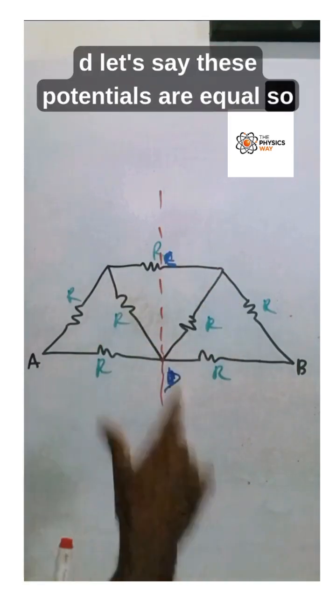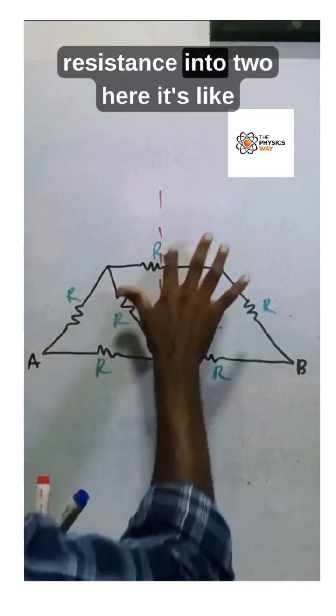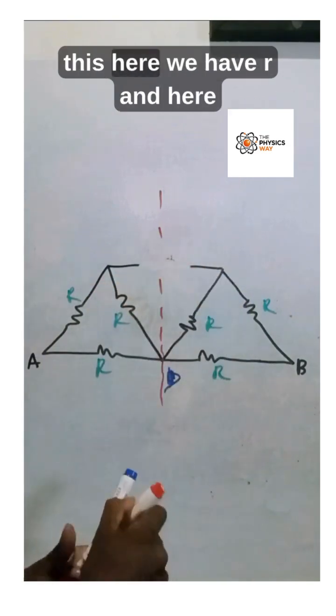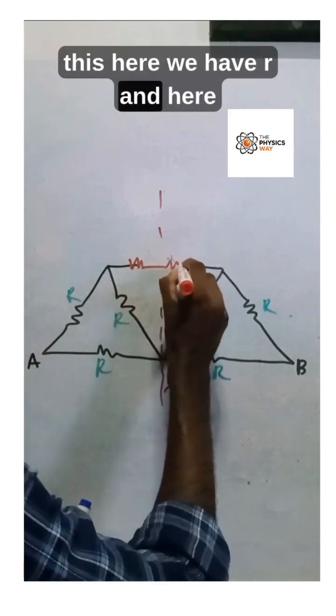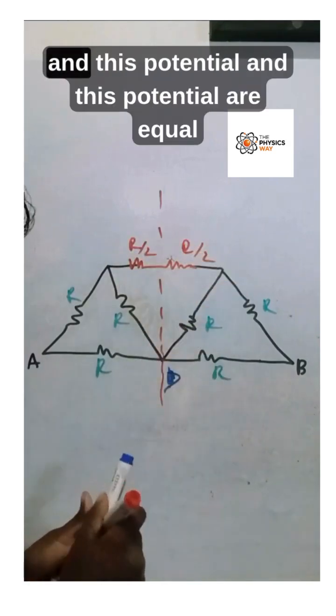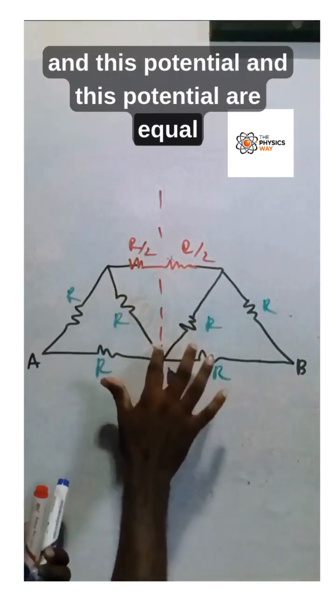We're splitting this resistance into two. Here we have R and here we have R, so it's R by 2 and R by 2. Since this potential and this potential are equal, we're connecting them.